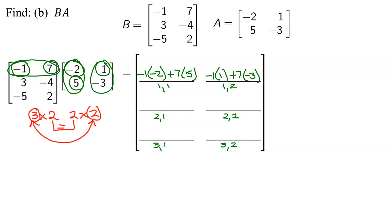Now I need to move on to my next row, row two times column one. Here's my row two times column one. So three times negative two, plus negative four times five. And then row two times column two. So three times one, plus negative four times negative three.